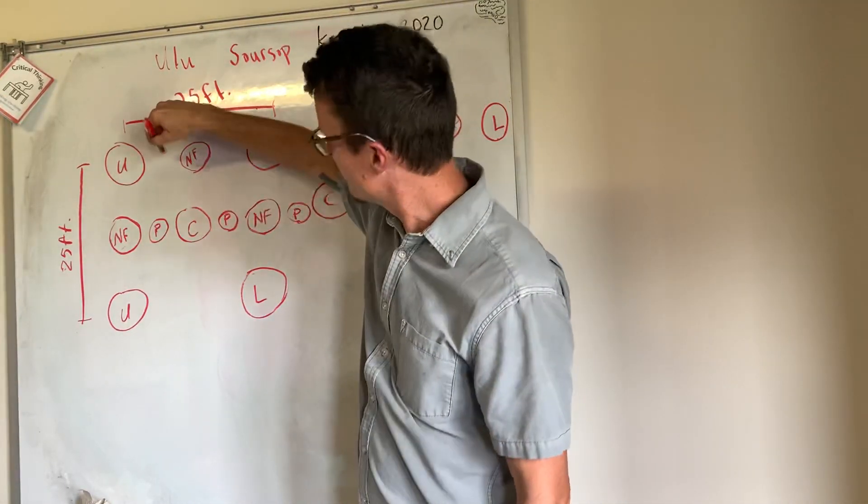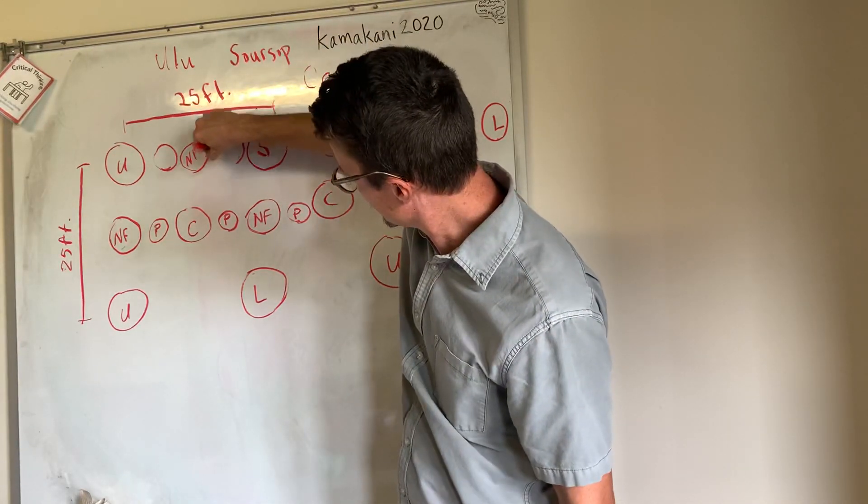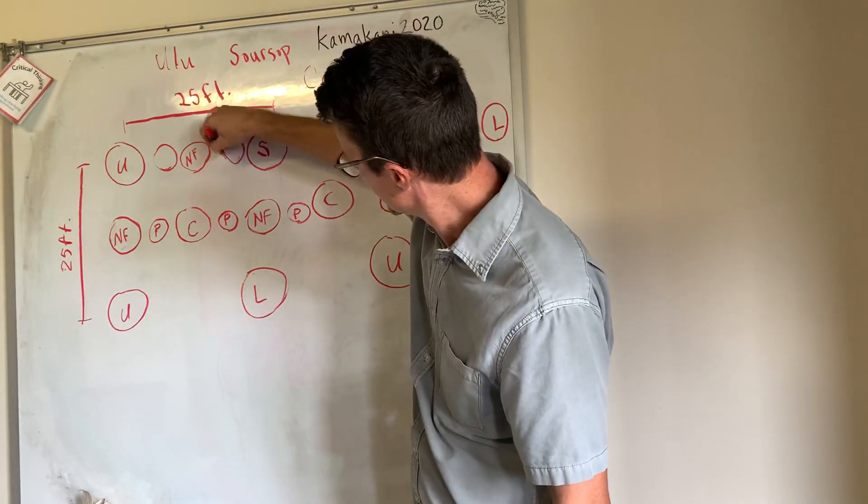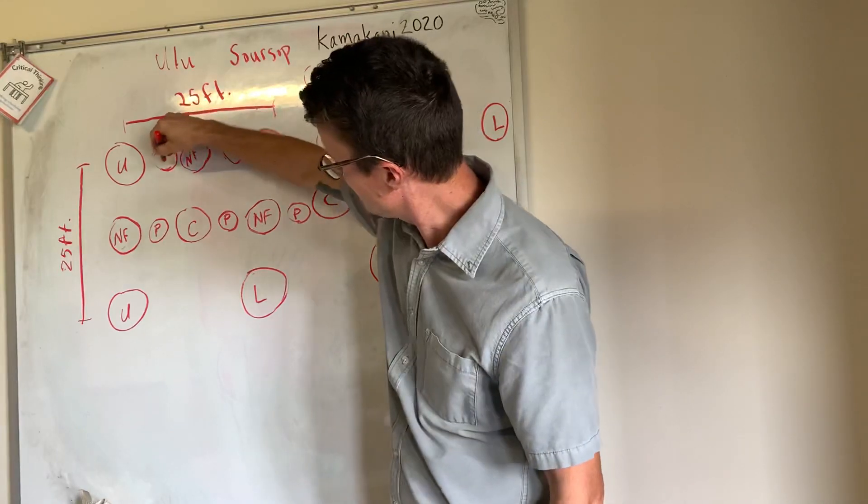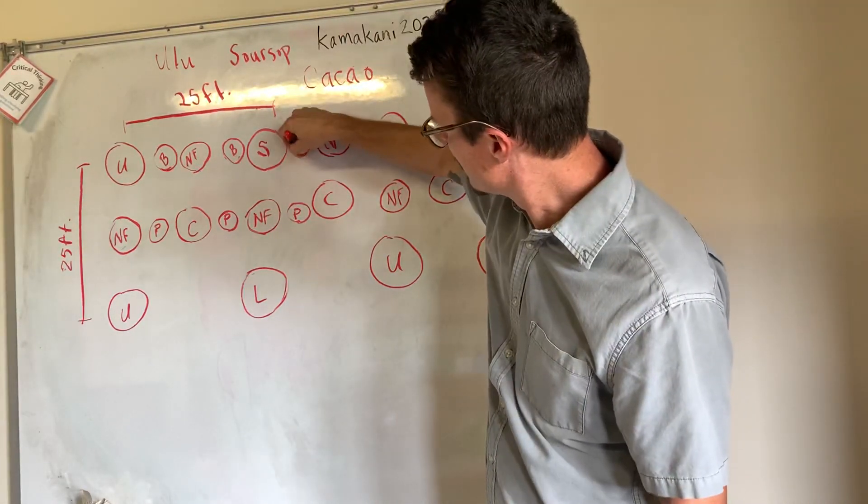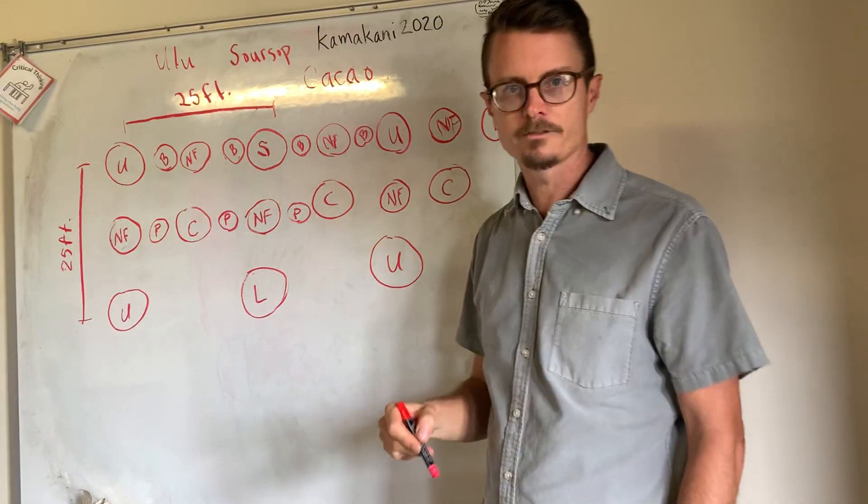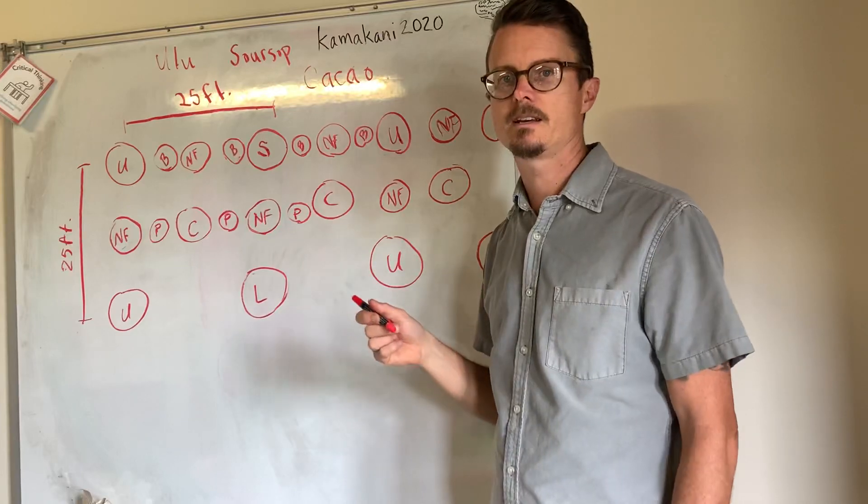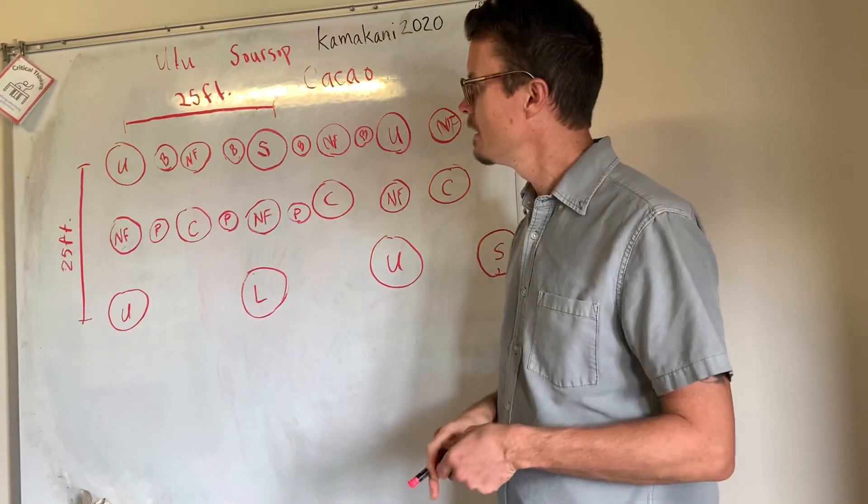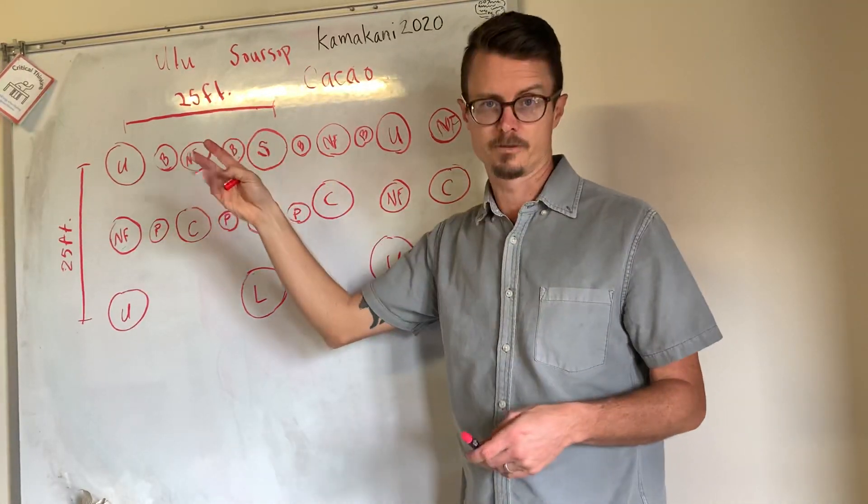And then mixed in those rows, I'm going to put a B for banana, which likely we will not use as a fruit crop but just a biomass accumulator, some shade. So we'll be constantly cutting those down, feeding them to the fruit trees.